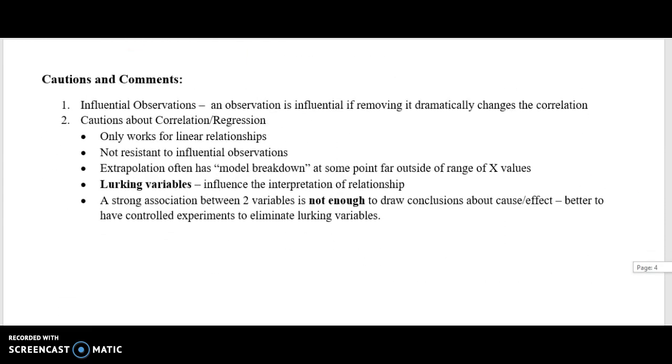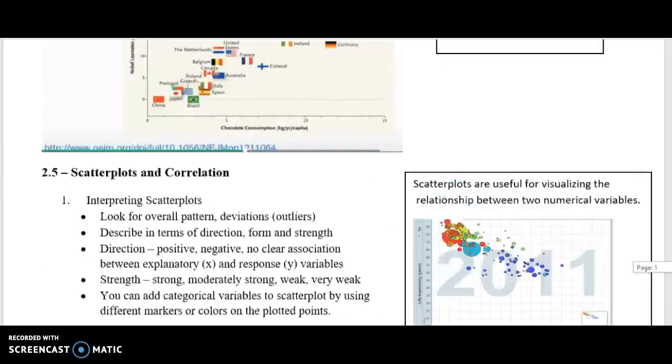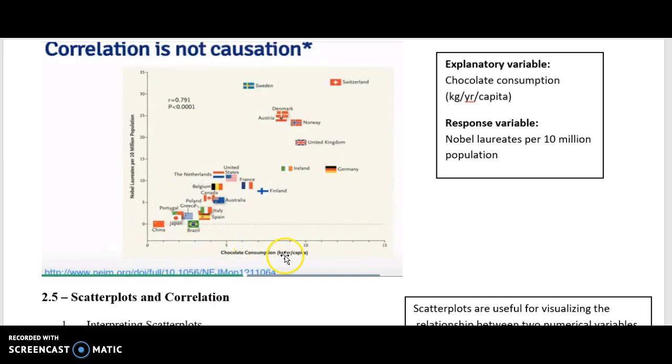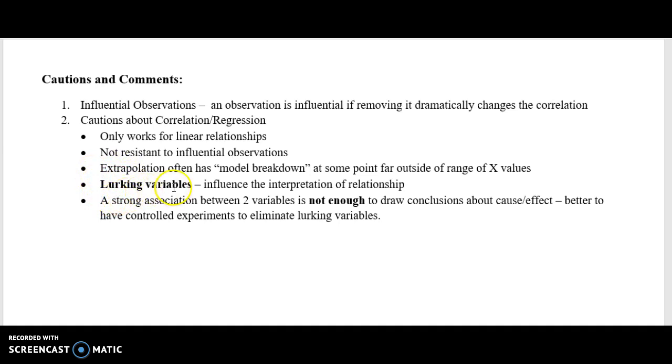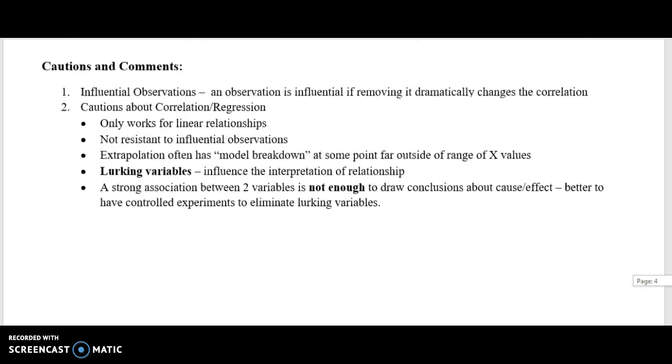I want to go full circle and go back to the original chocolate and Nobel laureate example, because if you recall, way back here, we determined that there is no way that eating chocolate in a society increases number of Nobel laureates. But we do see a clear trend, and so the question is, is there something lurking that's connecting chocolate consumption and Nobel laureates? That is almost always the case that there may be a third variable called a lurking variable or a confounding variable that's influencing the relationship between something like chocolate and number of Nobel laureates. We are going to have to dig deeper into what is a lurking variable, and you'll do plenty of that in your group work.